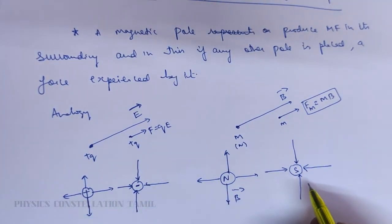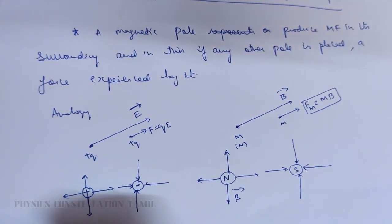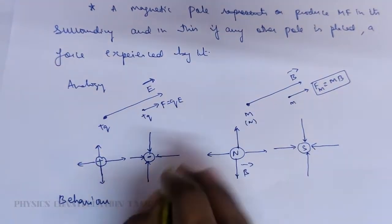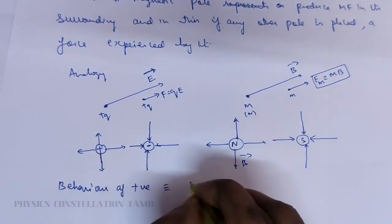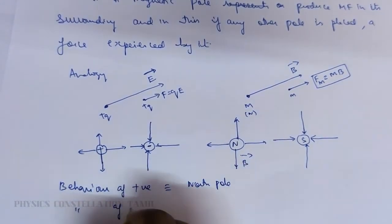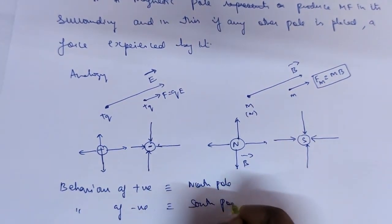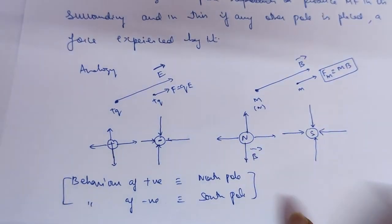This is very, very important. You can write: behavior of positive charge in an electric field is similar to a north pole. Behavior of negative charge is similar to a south pole. This is a very, very important concept — keep this in your mind.